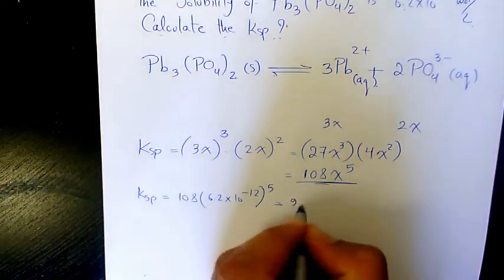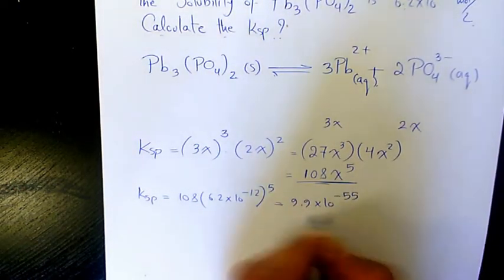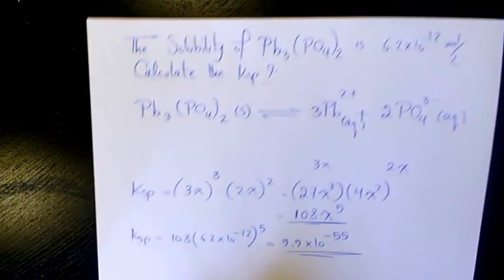it's going to be 9.9 × 10^-55. So that's the Ksp for lead phosphate.